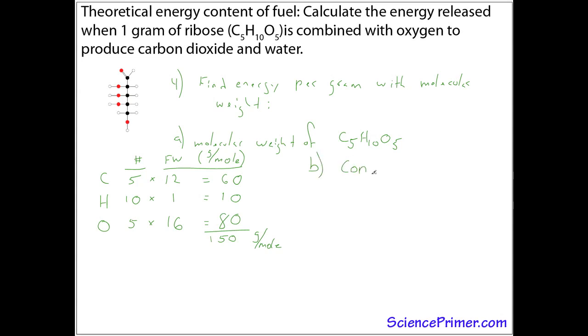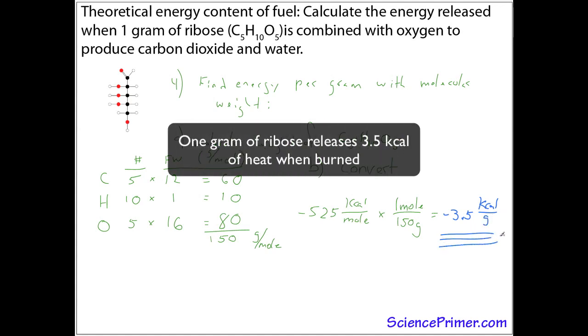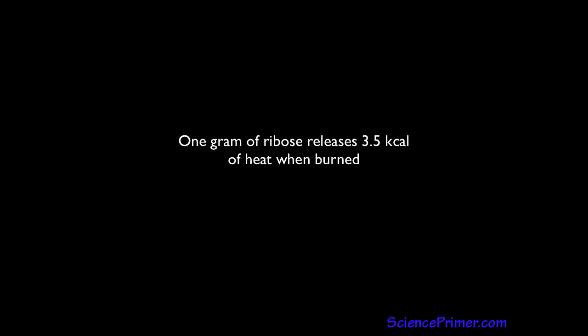Armed with this, we can now convert our kilocals per mole value to kilocals per gram by doing a simple conversion. Negative 525 kilocals per mole times 1 mole per 150 grams. The moles are going to cancel and we'll get the final answer of negative 3.5 kilocals per gram as the energy released when 1 gram of ribose is burned.